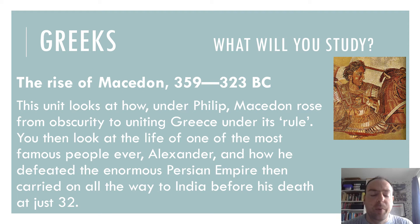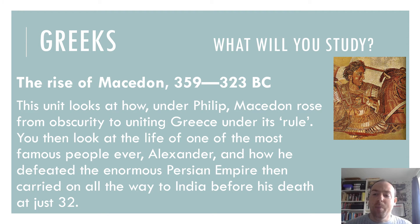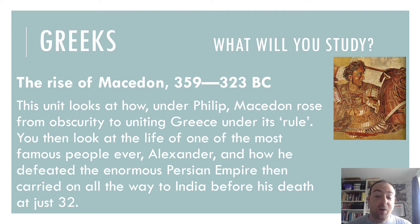The second Greek unit is the Rise of Macedon. In this you look at Philip, who rose from obscurity uniting the Greeks under his rule, and then you look at the life of probably one of the most famous people ever — Alexander, not only just Alexander but Alexander the Great, an amazing military leader. He defeated the enormous Persian Empire and then just kept on going, making his way all the way to India, creating one of the greatest empires of all time, and then died aged just 32. The story of Alexander covers his military tactics, his cleverness, the untying of the Gordian Knot, and all kinds of exciting things — so Alexander is a really fascinating character.